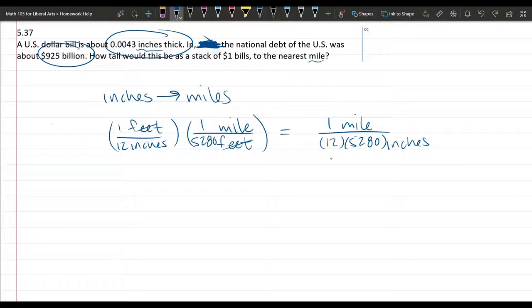So a U.S. dollar bill is that many inches thick. So we have 0.0043 inches. It's supposed to be an H. Inches. And we have a lot of dollar bills. 925 billion of these.